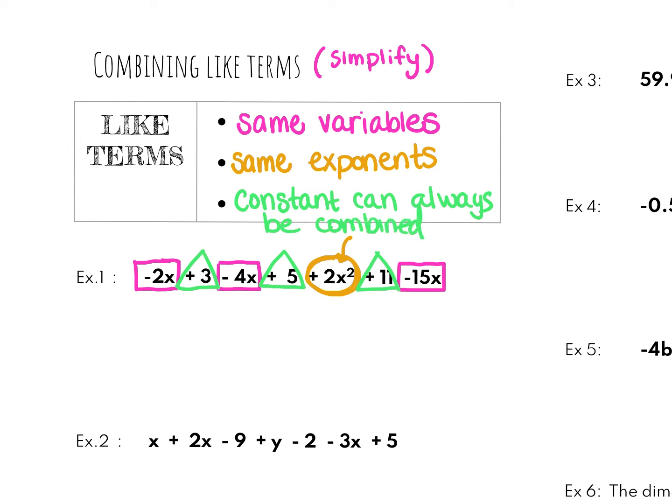Now that I have identified all of my like terms, I can combine them. So what I'm going to do is I'm going to start with my negative 2x right here. And I'm going to add my negative 4x to that, and that is going to be negative 21x. So down here I'm going to write negative 21x as my first term. And I've essentially used those three that I have in pink that I have boxed.